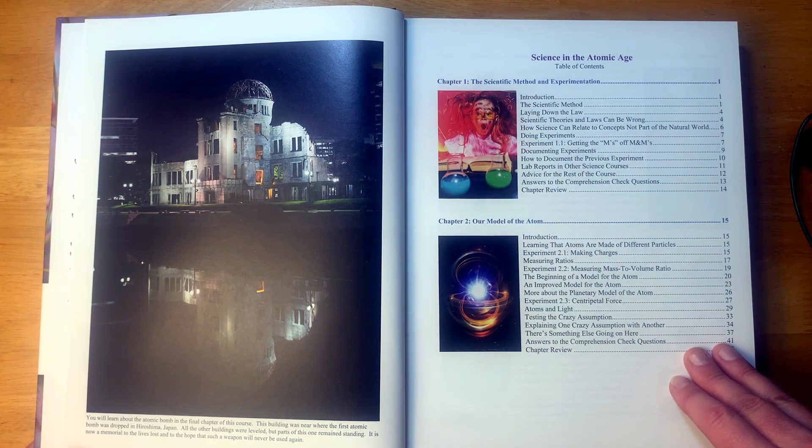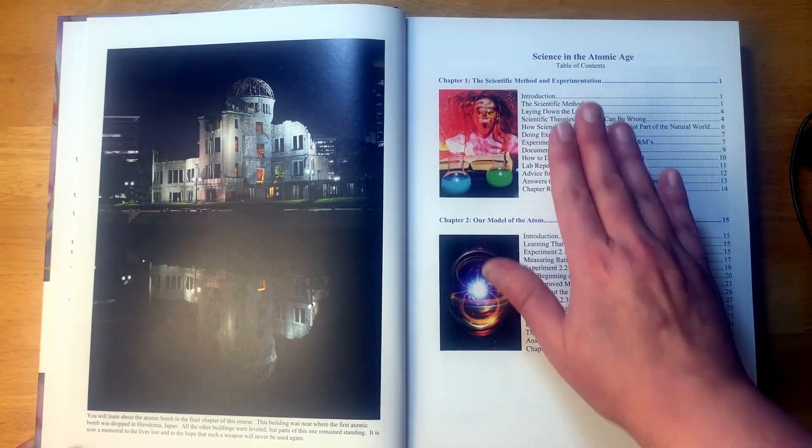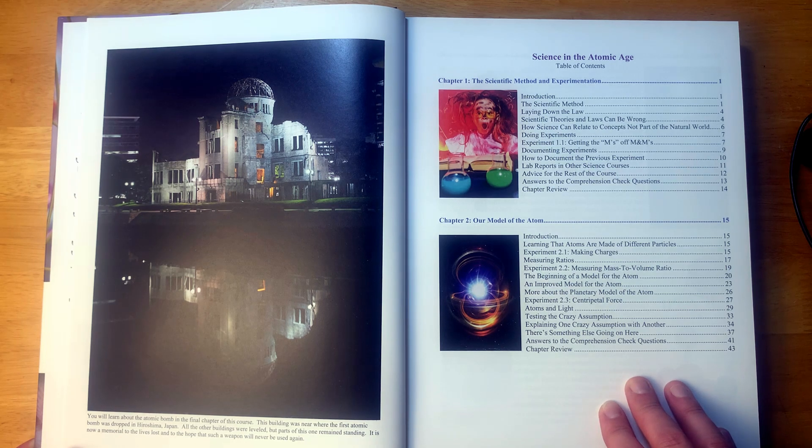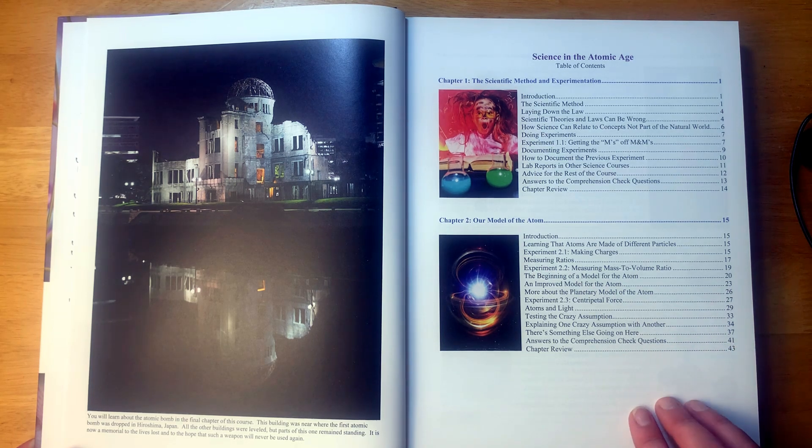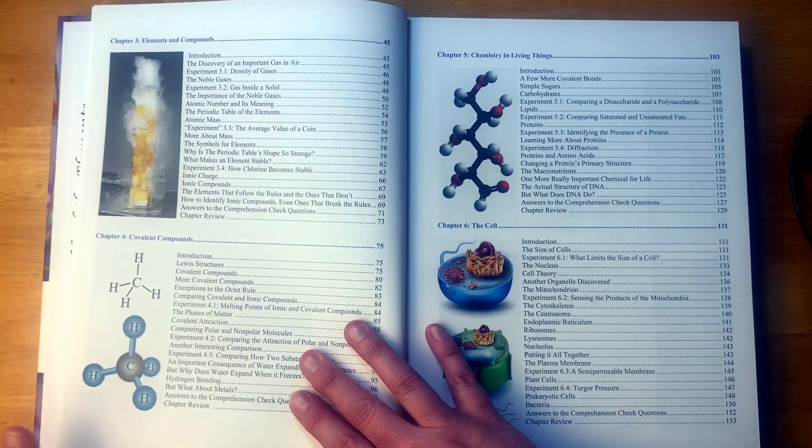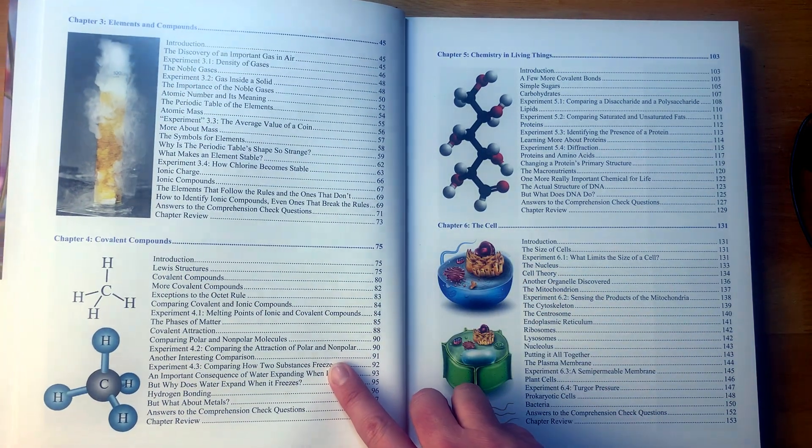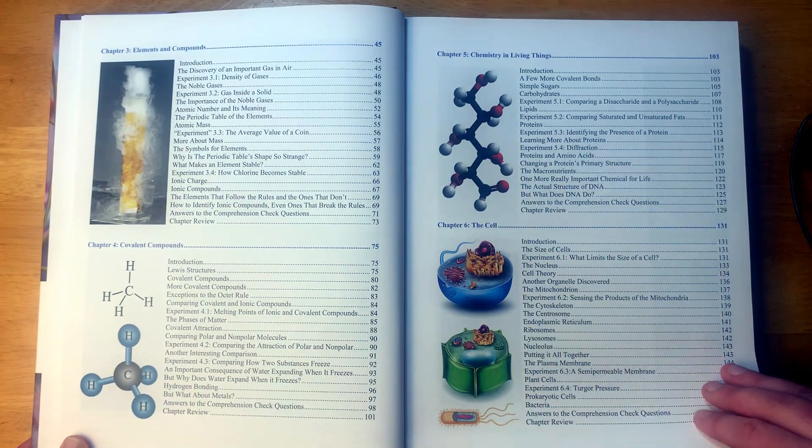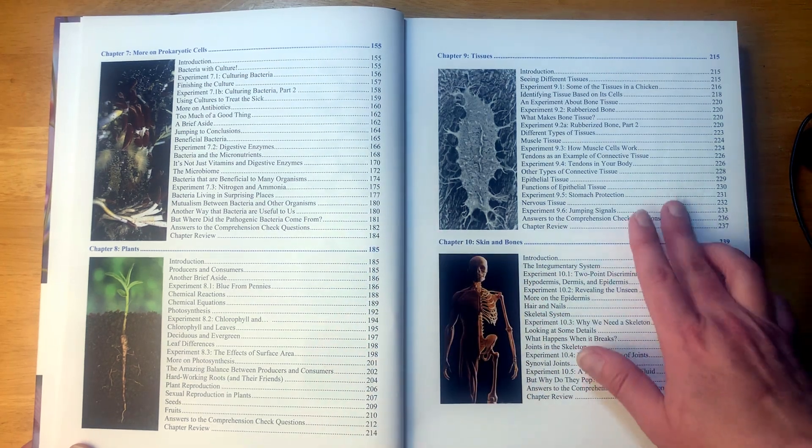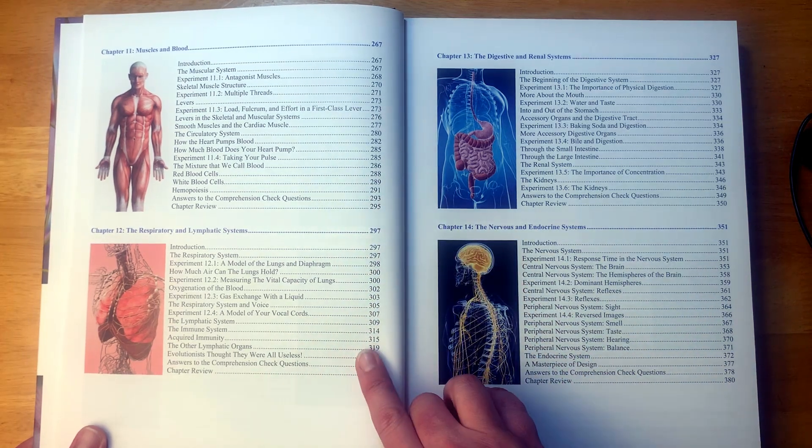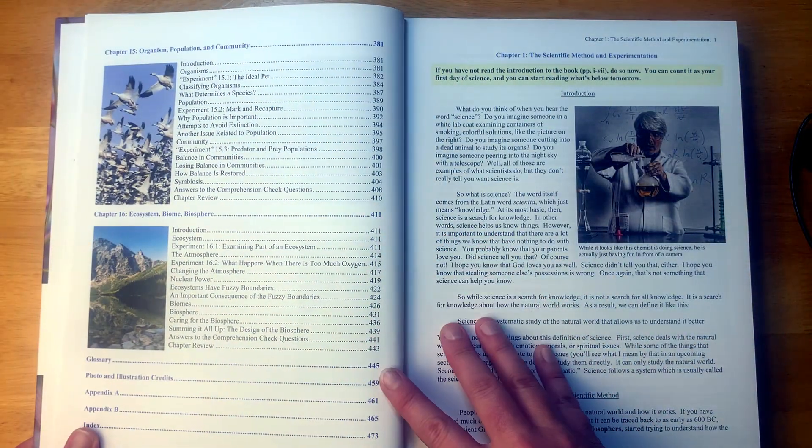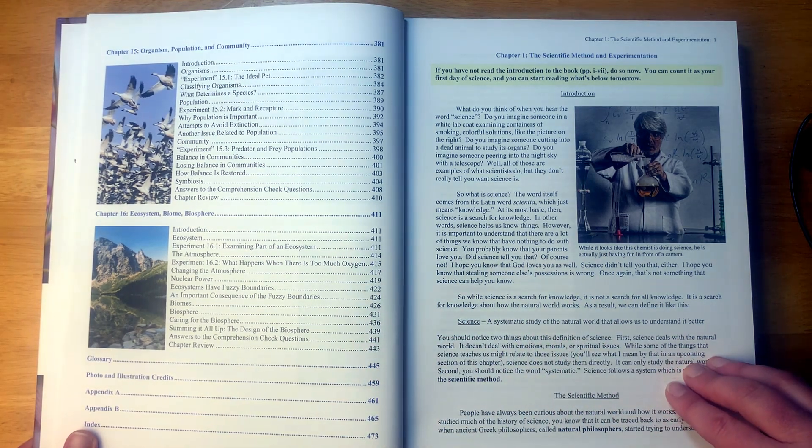So chapter one is the scientific method and experimentation. So this sounds like a great course to just start learning about the scientific method and how to do lab reports and things like that. This is something we have not done in my homeschool at all up until this point. And I have some high schoolers this year. So we're going to have to learn, but it would be nice if we could have covered that a little bit earlier with like my middle schoolers. Here we have our model of the atom. Elements and compounds. Covalent compounds. I'm not a science person. I'm sorry if I mispronounced these words. Chemistry and living things. The cell. More on prokaryotic cells. Plants, tissues, skin, and bones. Muscles and blood. Respiratory and lymphatic system. Digestive and renal systems. The nervous and endocrine systems. Organisms, population, and community. And ecosystems, biome, and biosphere.